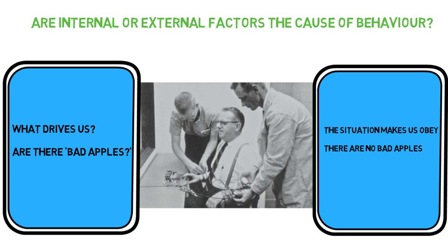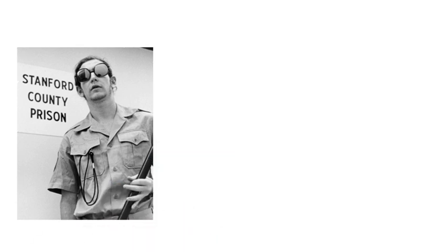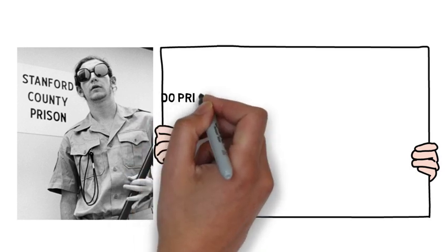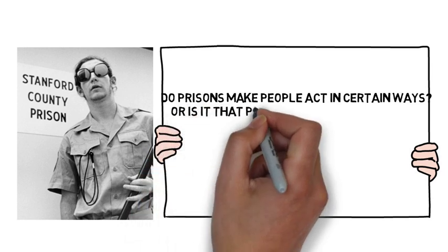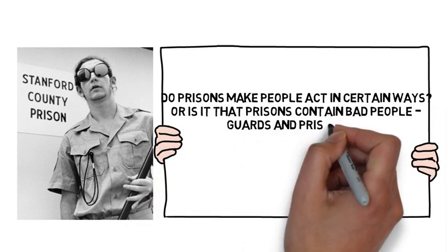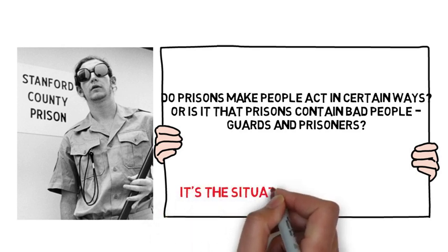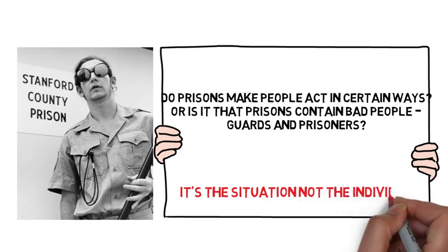Philip Zimbardo in the Stanford Prison Experiment - really famous piece of research - found exactly the same thing. This idea that is it prisons that make people act in certain ways, or is it that prisons contain bad people and they're going to act like that? Zimbardo found the same thing: it's the situation that creates the individual, not the individual themselves. So this idea of evil being inherent is largely untrue.